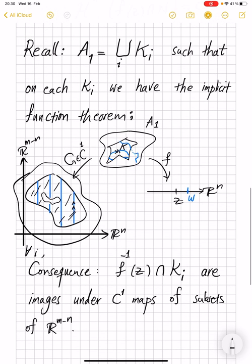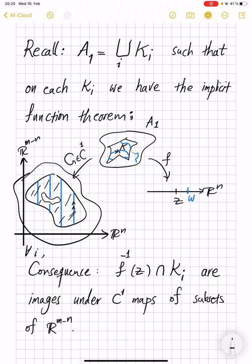We can, in this decomposition of A1, require that k_i's are disjoint. We can always begin with k1, from k2 remove k1, from k3 remove whatever has already been covered, and inductively, you can make these k_i's disjoint.